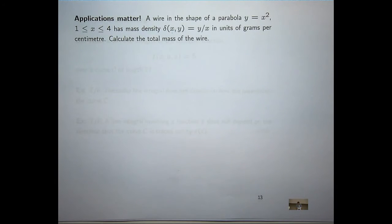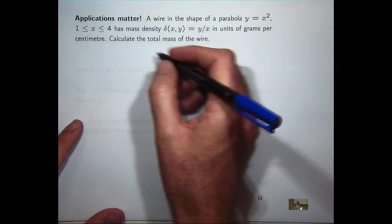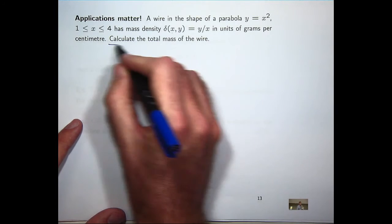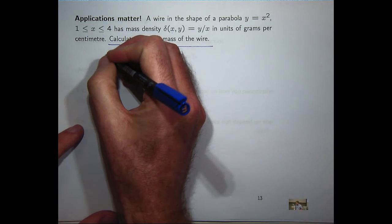So this is a good problem. It's fairly simple. We've got a wire bent in the shape of a parabola, and we've got a representation for the density function. We're asked to calculate the total mass of the wire. So it's just a basic example.